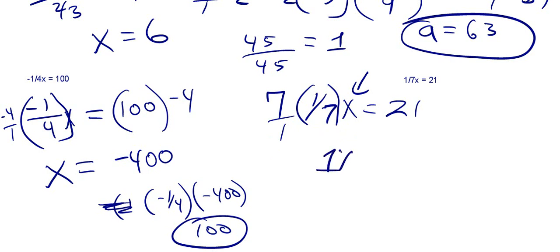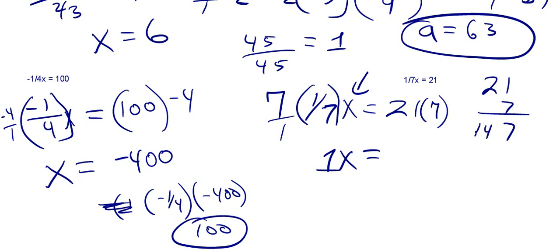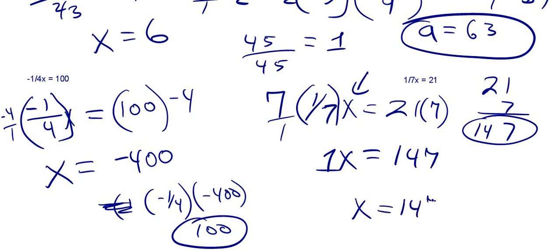Sometimes students learning this want to put that 1x there — that's perfectly okay. You just have to see what your teacher wants you to do. We multiply this side by 7, so we've got to multiply 21 by 7 as well. 7 times 1 is 7, 7 times 2 is 14, so 21 times 7 is 147. Our final answer is x is equal to 147.